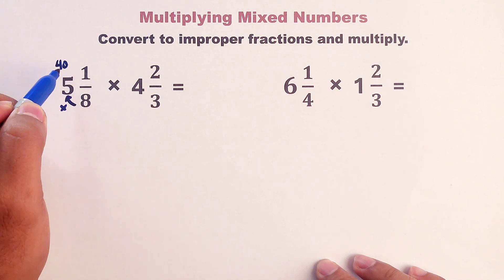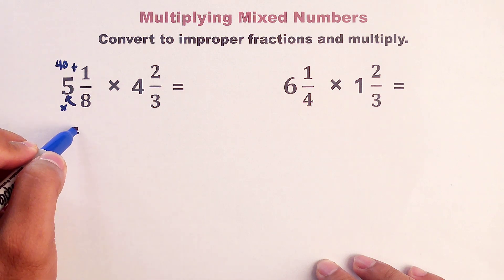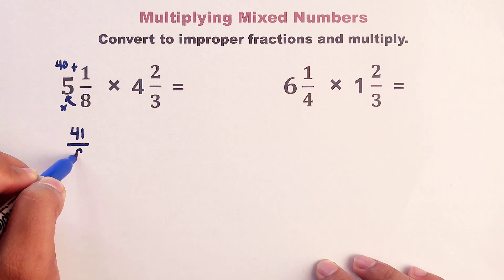Then we will add this product to the numerator. 40 plus 1, that is equal to 41 over 8. Copy your denominator.